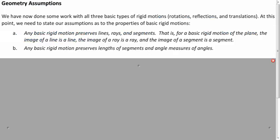So some assumptions. In addition to what we already talked about with segment length and angle measurements, basic rigid motions also will map lines to lines, rays to rays, and segments to segments. So those basic figures aren't changing.